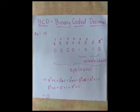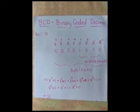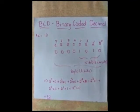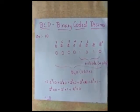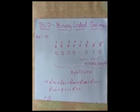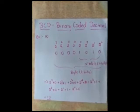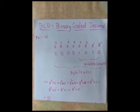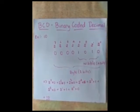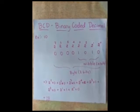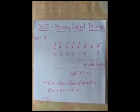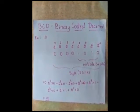What exactly is BCD? BCD, binary coded decimal, is a class of binary encodings of decimal numbers where each decimal digit is represented by a fixed number of bits. For example, 10 will be represented in binary where the value of each bit will be the power of 2.